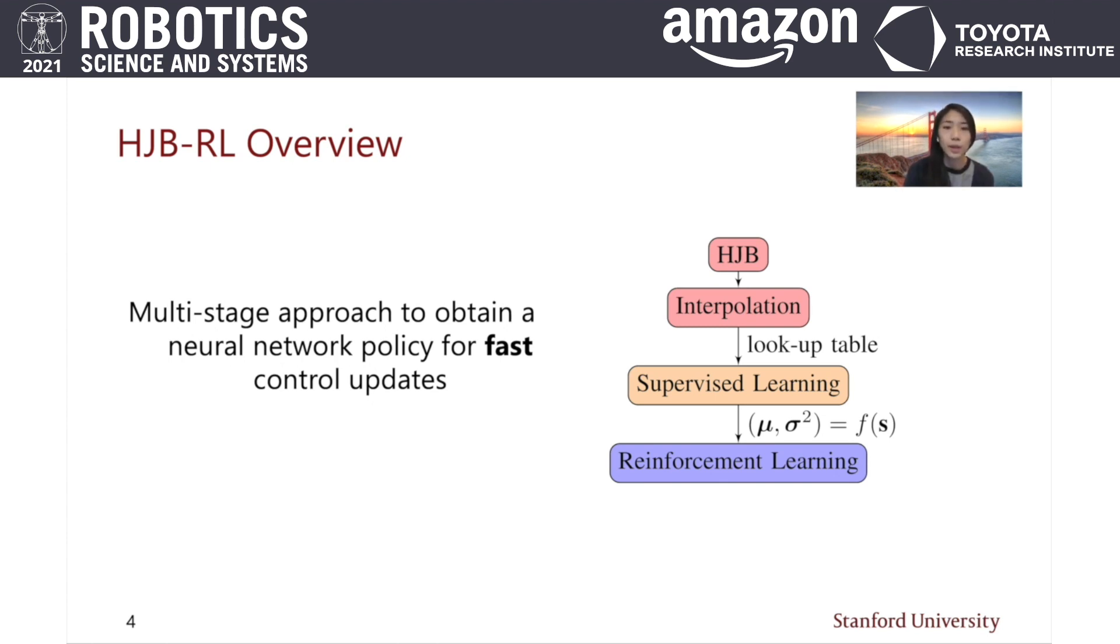We first compute the solution to a Hamilton-Jacobi-Bellman or HJB equation using a lower dimensional approximation of a quadrotor, then use the resulting lookup table as data to train a neural network. This network is then improved with the full 12-dimensional quadrotor dynamic system.